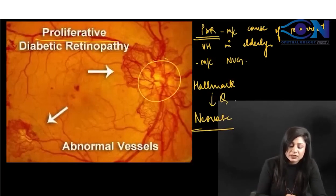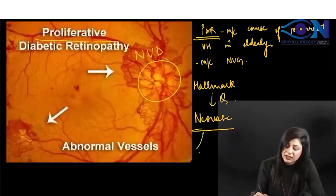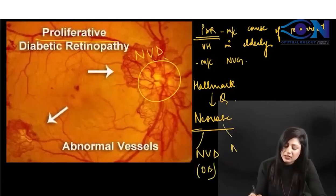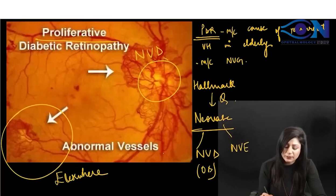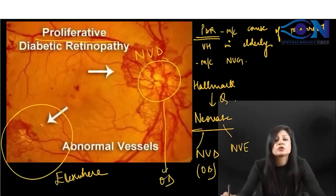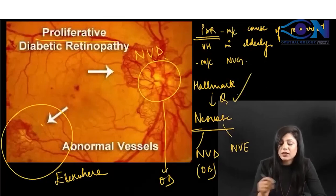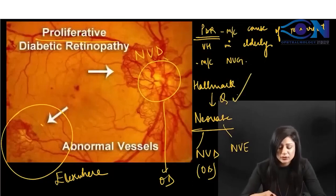You can see the optic disc, so this will be NVD — neovascularization at the disc. NVD means neovascularization at the optic disc, and we can also get NVE — neovascularization elsewhere — like what you are seeing here. So in proliferative diabetic retinopathy, you can get it over the optic disc or elsewhere. The hallmark is neovascularization.